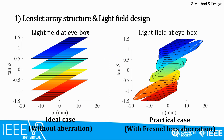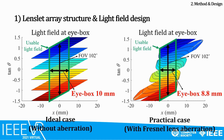These two figures show the 2D light field at the eye box, for the ideal case without aberration and the practical case with Fresnel lens aberration. It seems like the Fresnel lens distorts the light field very much, but if we focus on the usable light field area, the effect of the aberration on the eye box is not so much. The eye box size shrinks by only 12%, and we can still secure 8.8 mm eye box. Every other performance like field of view and thickness remains the same.